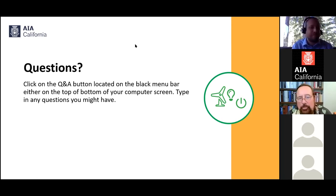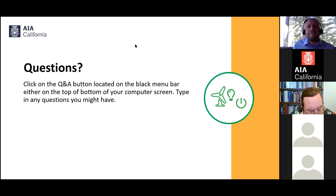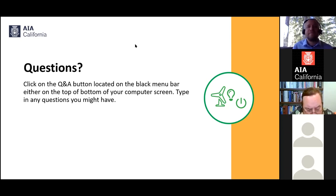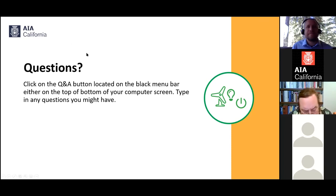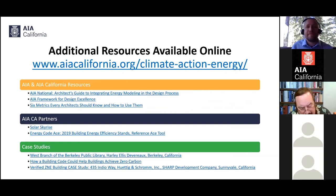With 20 questions still open and time running out, Don notes that unanswered questions will be addressed on the climate action webinar site. With over 160 people in attendance, AIA HSW credit will appear on participants' transcripts within two weeks. Stett's slide deck and recommended resources will be sent out tomorrow, and the recording will be made available shortly thereafter. The next live demonstration of Solar Skyrise's new software platform is scheduled for Thursday, May 7th at 12 p.m., with details in the follow-up email.